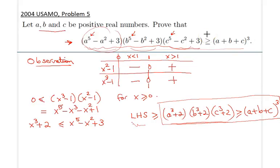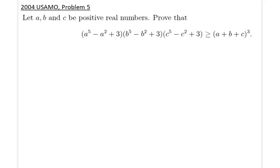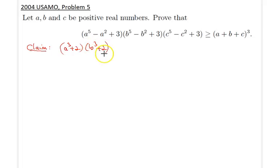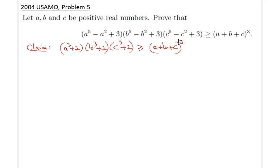At this point we can attempt various approaches to solve this significantly easier inequality. What we will do is use some simple AM-GM facts. Our claim is: (a³+2)(b³+2)(c³+2) ≥ (a+b+c)³. That is really what we want to prove.